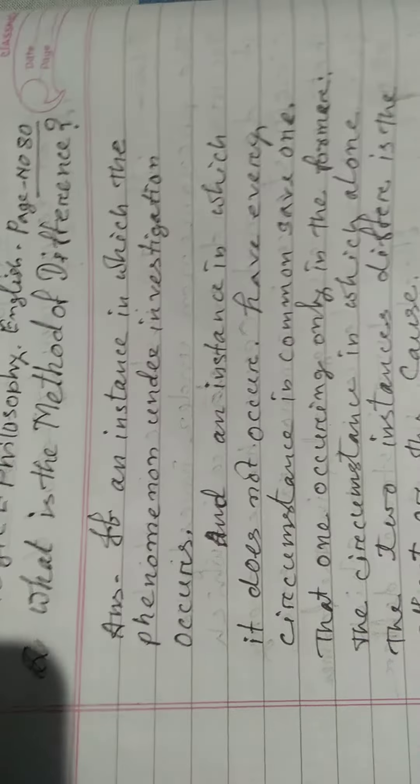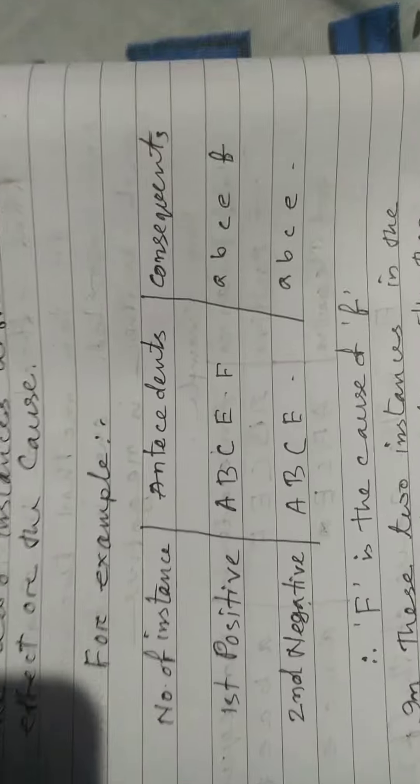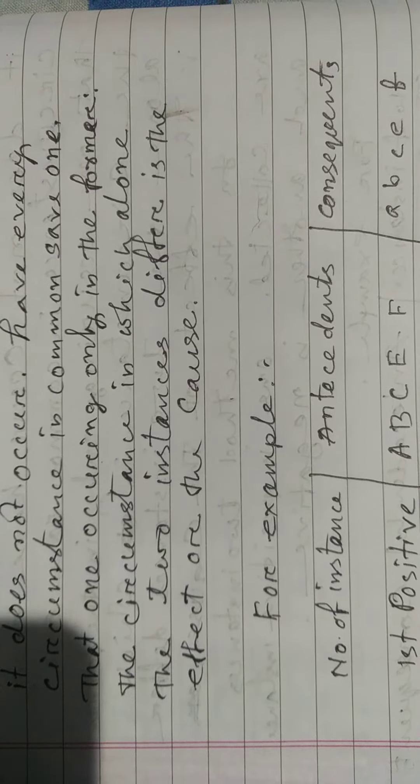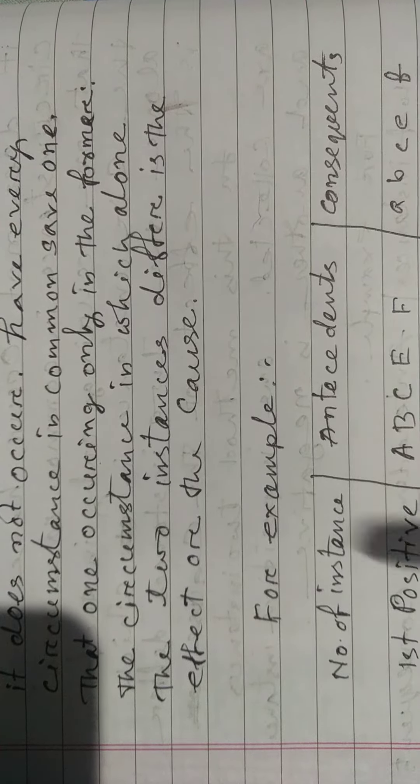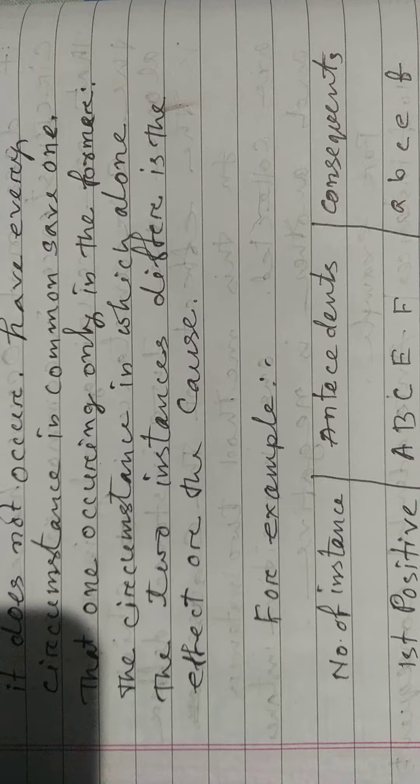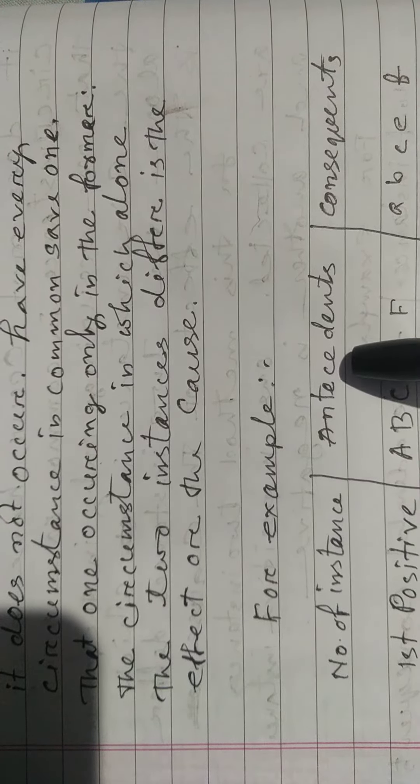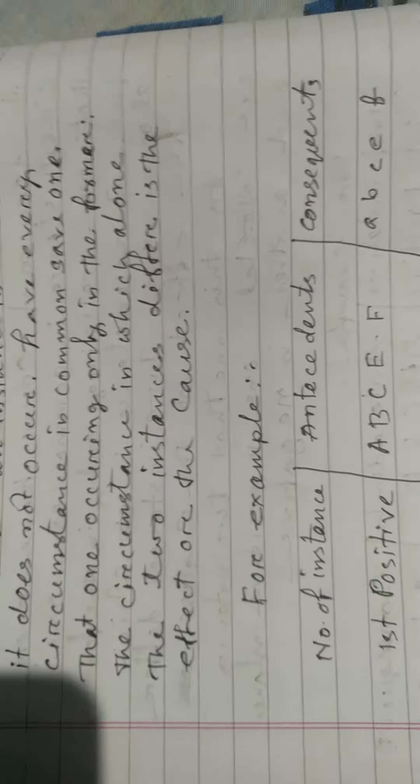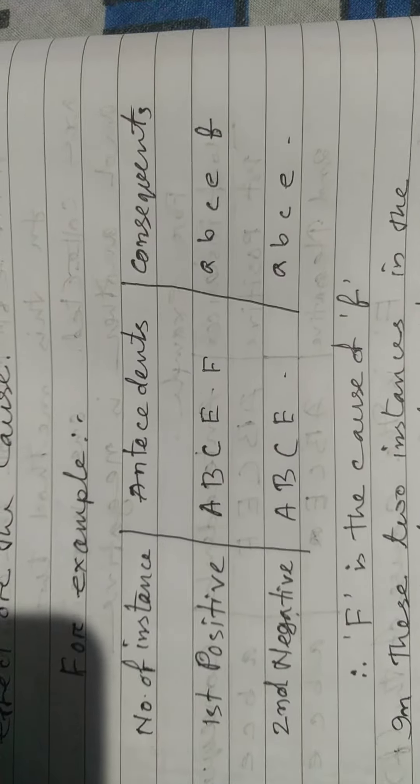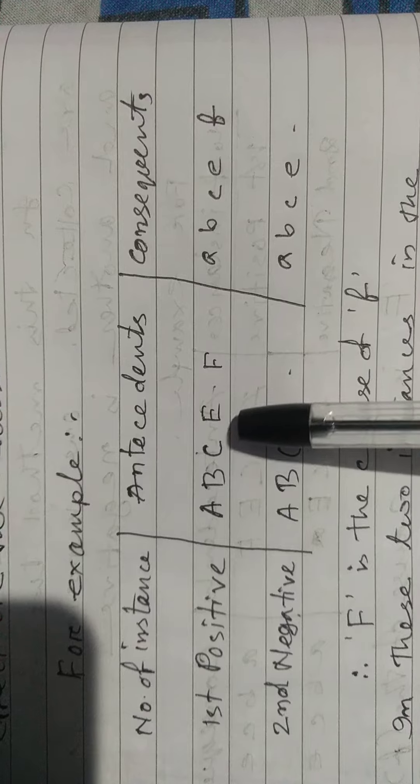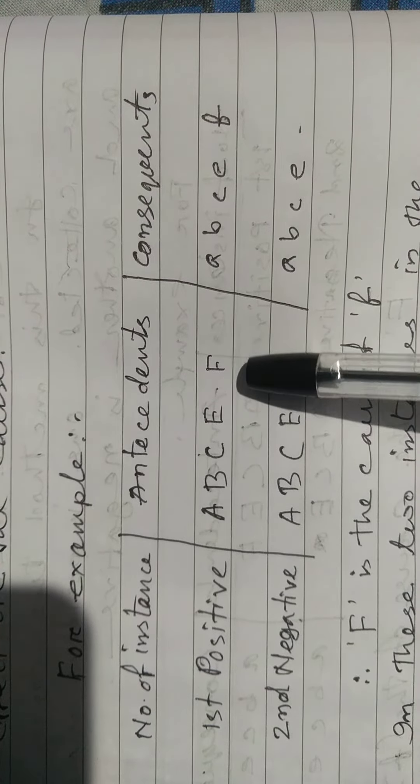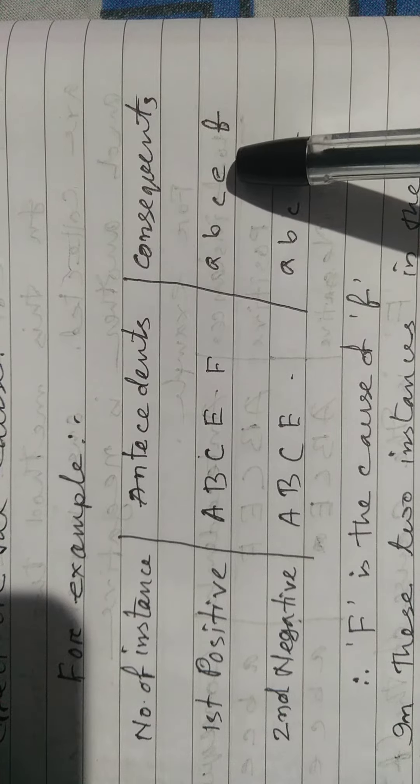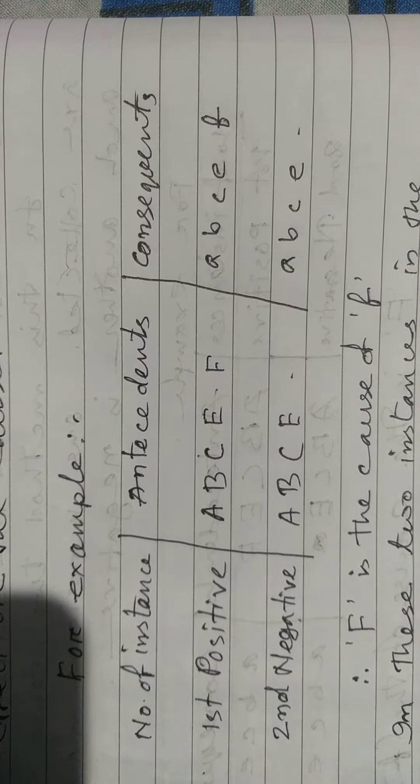For example, with positive and negative instances of antecedent and consequent, in the antecedent we have capital letters A B C E F, and therefore the consequent has lowercase a b c e f present.